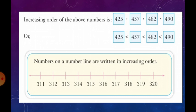So, this is the answer in increasing order. Otherwise, 425 is the smallest number, after the bigger number is 457, and after the bigger number 482, and after the bigger number 490. So, you have to put the bigger than symbol. Okay children, this is called as increasing order.